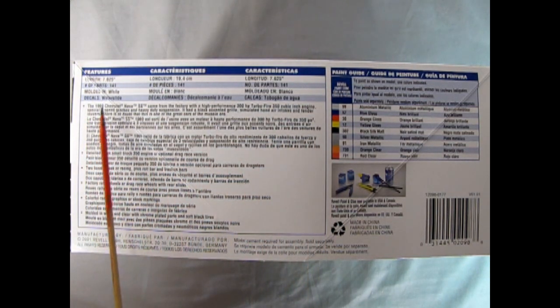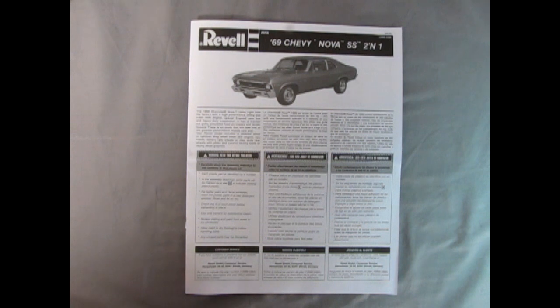On this side of the box we have the information on the kit like the length, number of parts and the color it's molded in, as well as our paint chart which coincides with the Revelle colors. Our easy to follow instructions are of the booklet style and we get a description in English, French and Spanish.